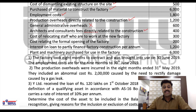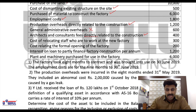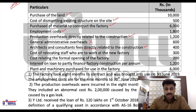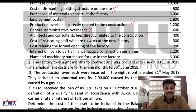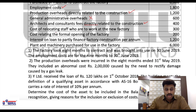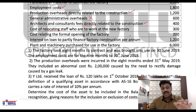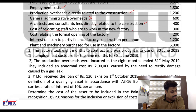Production overheads directly related to construction will be included. General administration overheads will not be included — it is not a directly attributable cost. Purchase of land, cost of dismantling, purchase of material to construct, and employment costs are all directly attributable costs. Cost of relocating the staff to work at the new factory will not be included.